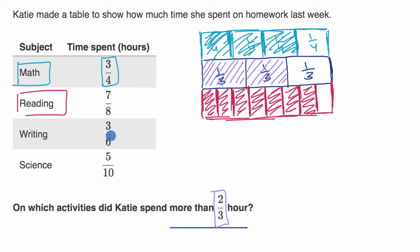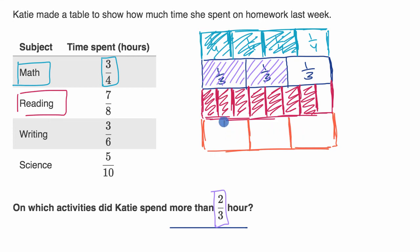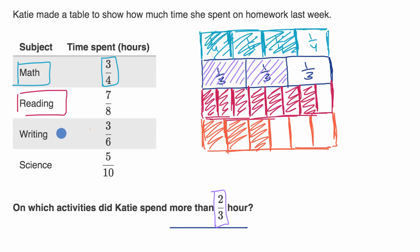Now, what about writing — three-sixths? I'll make a whole, split into thirds first, and then split each of those into two to get sixths, because we'll have six equal sections. Three of those six — one, two, and three. We can see that three-sixths is less than two-thirds, so I'm not going to circle that one.